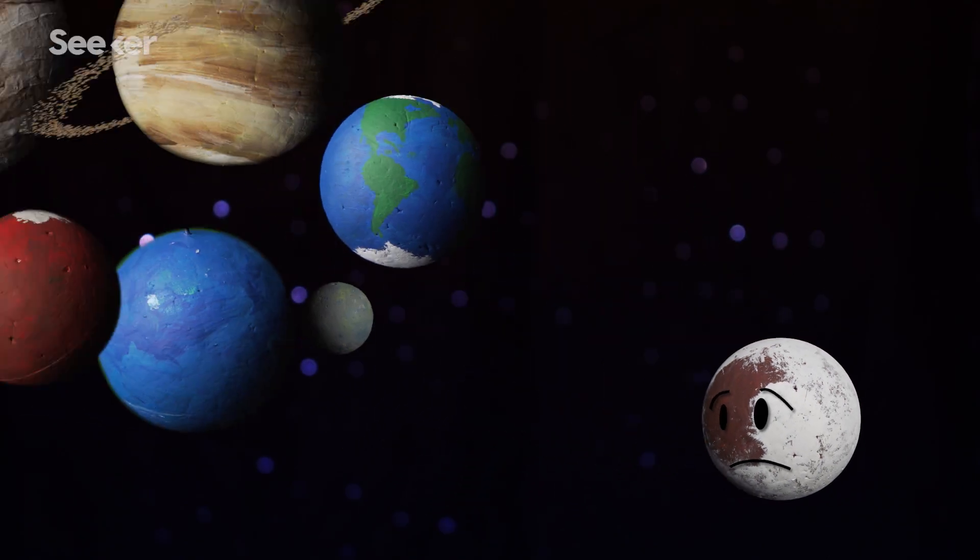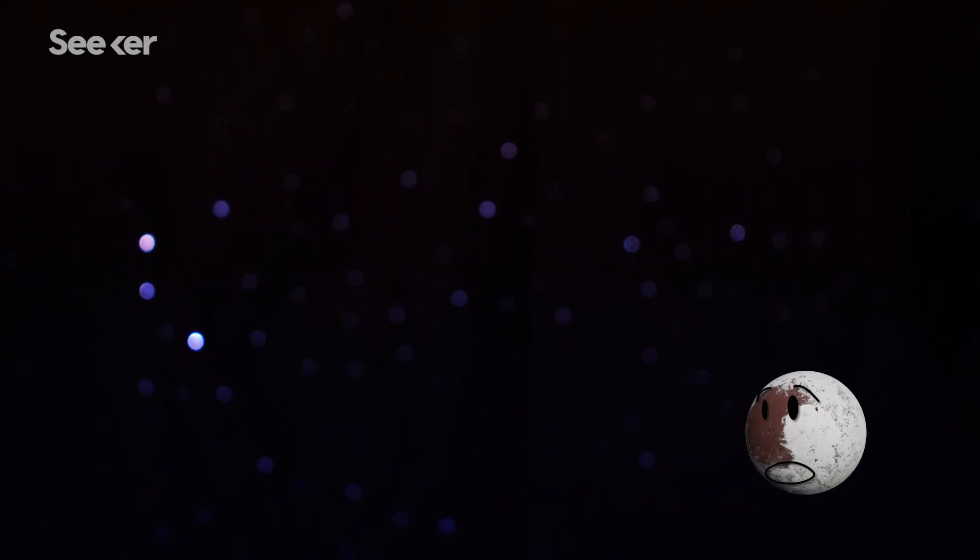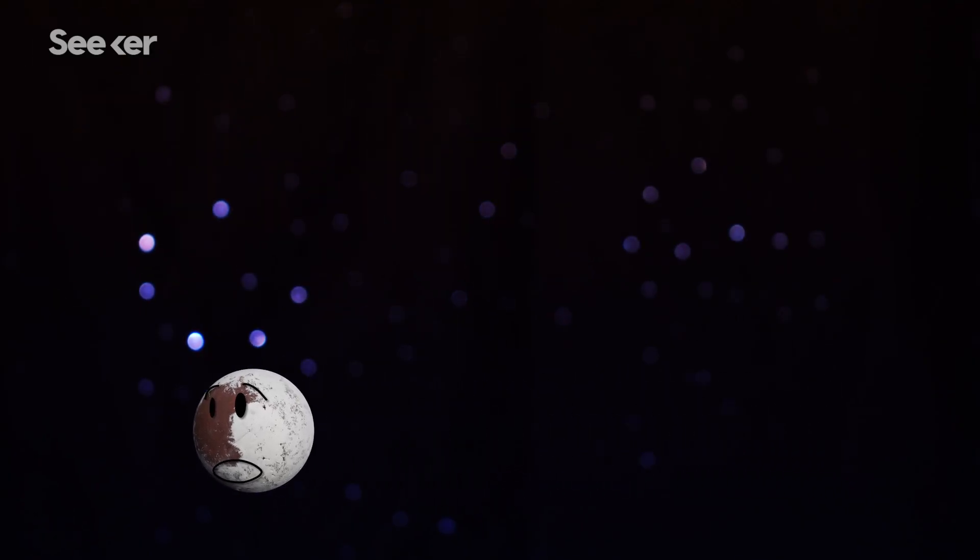Pluto had a rough go as a planet. He was the runt of the solar system, always in the back of the line, and then he was kicked out of the planet club. Poor Pluto.